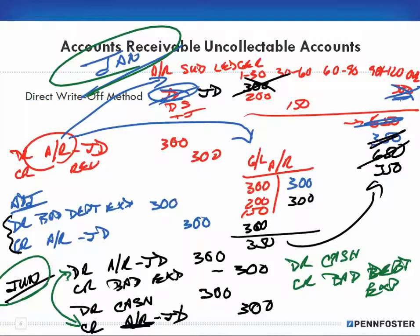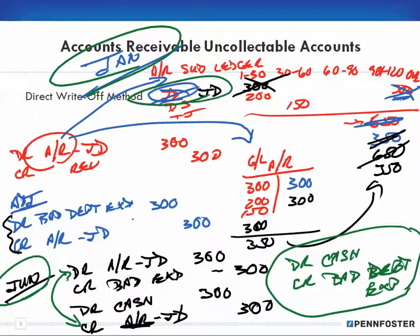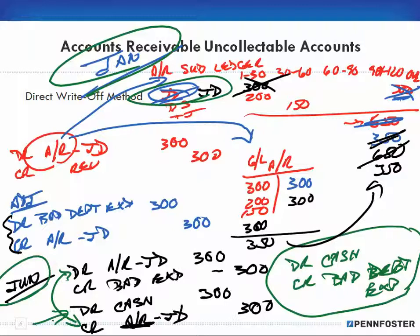The net effect is still the same transaction, but the difference is you can see what happened with John Doe. You might also write a description in the journal entry saying something like 'to reinstate John Doe's accounts receivable balance in anticipation of payment,' and then when you post the cash payment that washes off the accounts receivable.